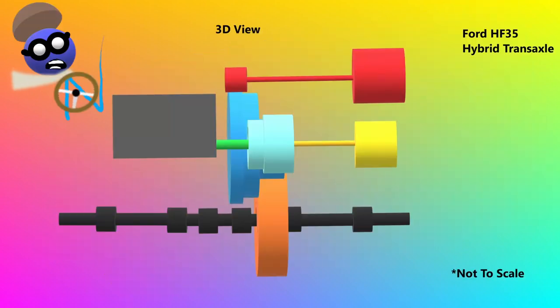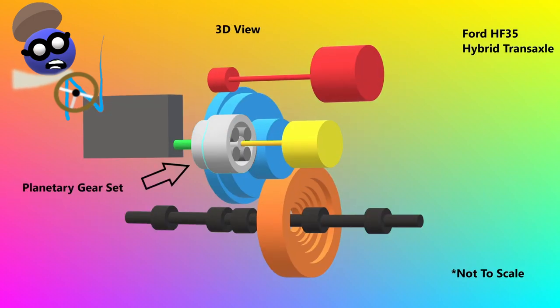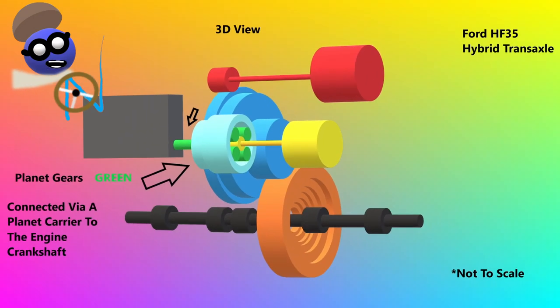Here is a 3D view. Note that it is not drawn to scale. So what is all this stuff? 2.5 liter Atkinson cycle four-cylinder engine. A planetary gear set that is the key to allowing the integration of an engine with an electric motor. Here are the planetary gears in green connected via a planet carrier to the engine crankshaft. This setup is necessary because there is no torque converter that is typically found in a transaxle.